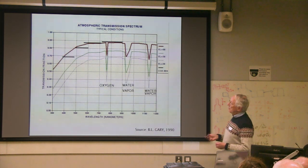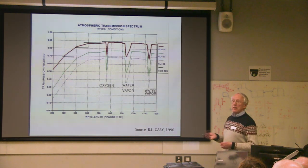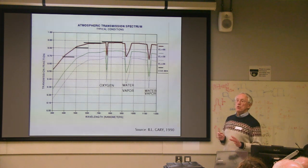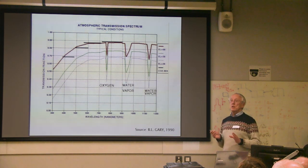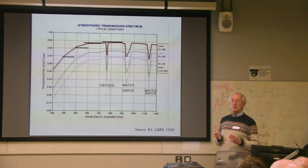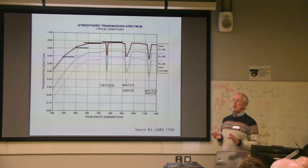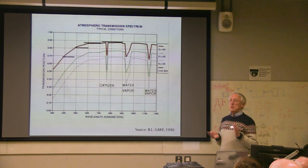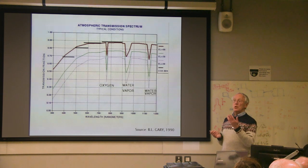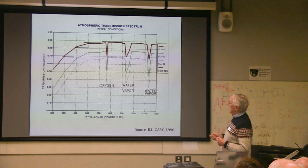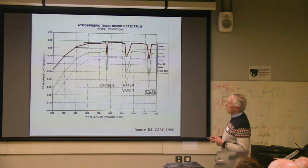Below 400nm we're into the dangerous UV — the stuff that causes cancer — and our eyes aren't sensitive there, so there's an obvious eye hazard with high-power UV sources: you can't see them, so if one is turned on and you look at it, you could do a lot of damage. Coming up to around 600–700nm is a better operating region.